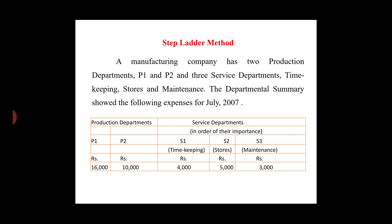Under production departments P1 and P2, and under service departments S1 (timekeeping), S2 (stores), and S3 (maintenance), the total expenses are: timekeeping 4,000, stores 5,000, and maintenance 3,000. We will apply the step ladder method to apportion these service departmental costs. In this method, each service department cost will be shown as a negative figure once redistributed.